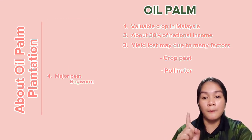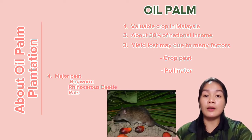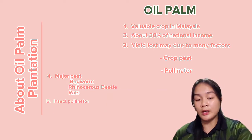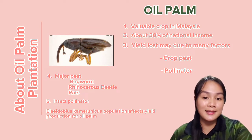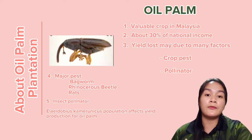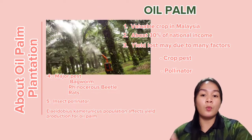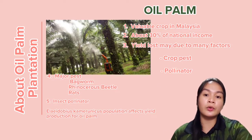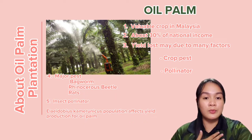Yield loss may be due to many factors such as crop pests and the pollinator. Major pests in oil palm plantation are bagworm, Oryctes rhinoceros, and rodents. Meanwhile, for the insect pollinator, there is Elaeidobius kamerunicus, where the population of this insect might affect the plant yield production. That is why proper pest management or control is crucial, which I will present in this video.